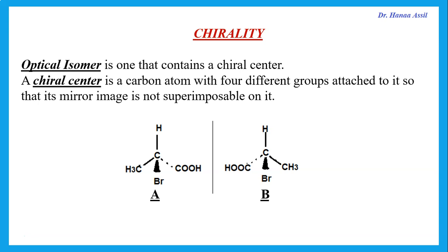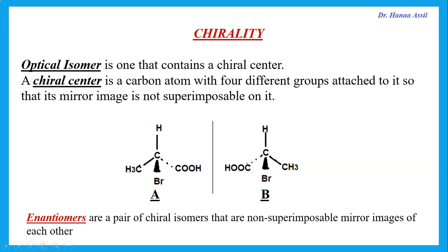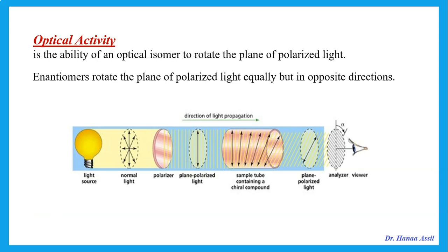An optical isomer is one that contains a chiral center, and a chiral center is a carbon that has four different groups attached to it so that its mirror image is not superimposable on it. If we have a carbon with four different groups, we can have optical isomers and the mirror images will not be superimposable on each other. The two forms of optical isomers are called enantiomers.